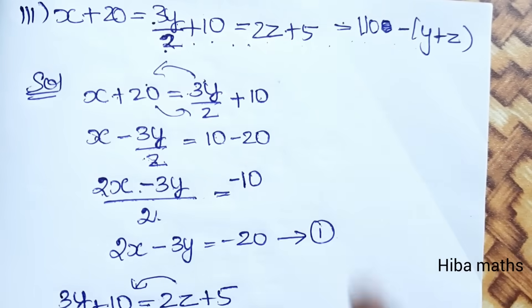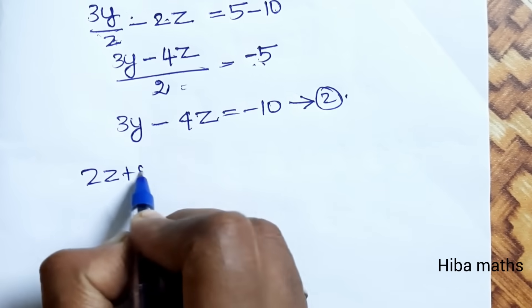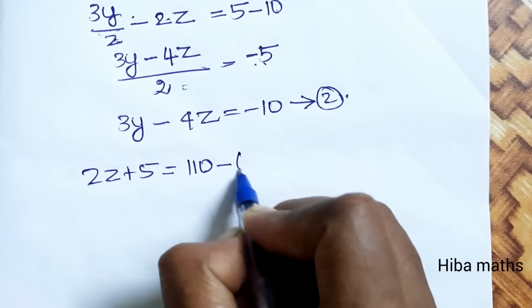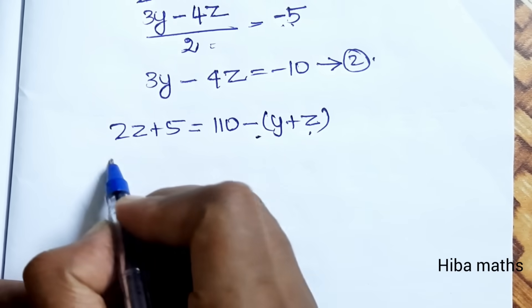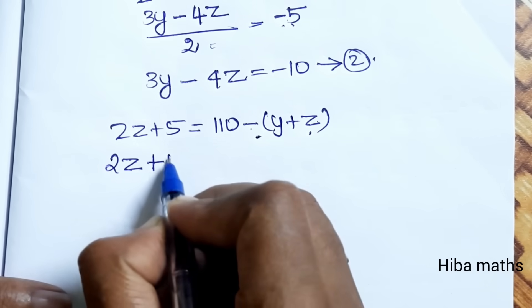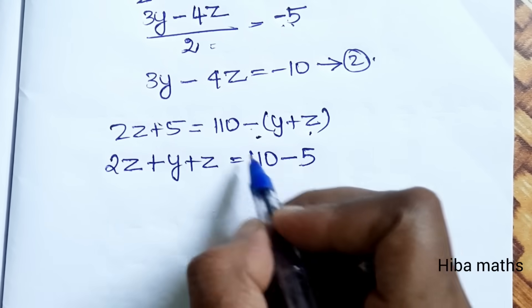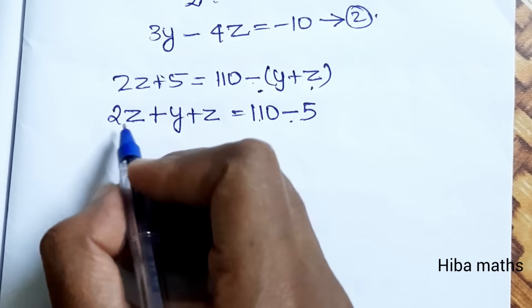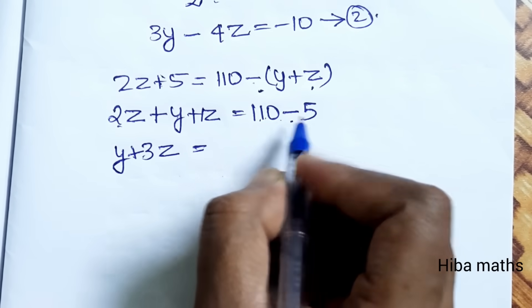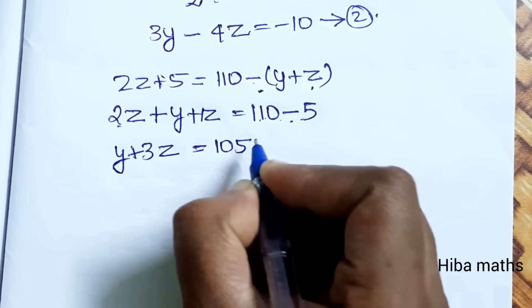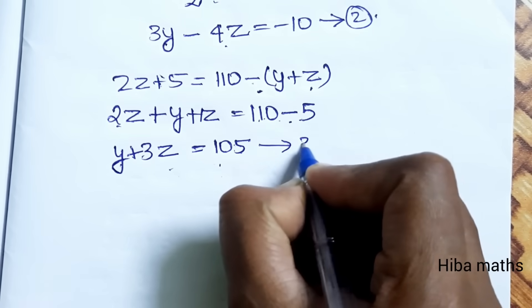Now compare 2z plus 5 with 110 minus y plus z. Rearranging: 2z minus z plus y equals 110 minus 5, giving y plus 3z equals 105. This is the third equation. We now have three equations to solve the system for x, y, and z.